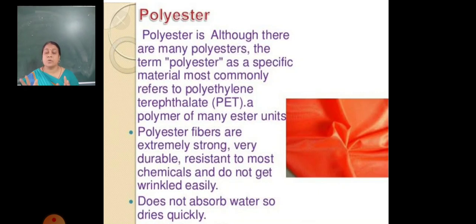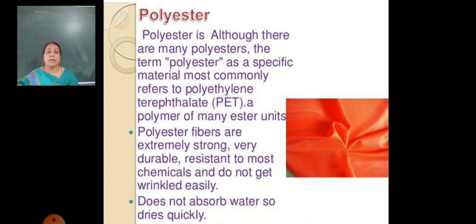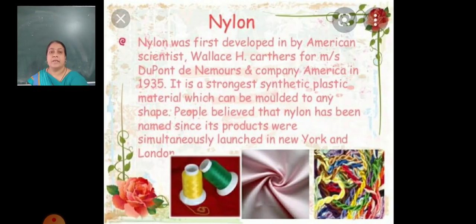Next, let's look at polyester. Poly means many, and polyester is most commonly referred to as polyethylene terephthalate. Here the ester units are combined to make polyester. Polyester fibers are extremely strong, very durable, resistant to most chemicals, and do not get wrinkled easily. They do not need ironing, do not absorb water, so they dry quickly, and do not need high temperature to dry.